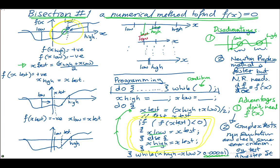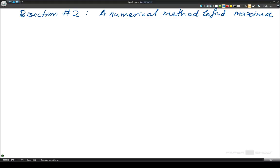Today we're going to apply the same logic. What we're going to be looking at doing is finding maxima. This is bisection part 2, using it as a numerical method to find maxima.